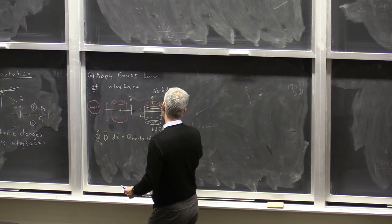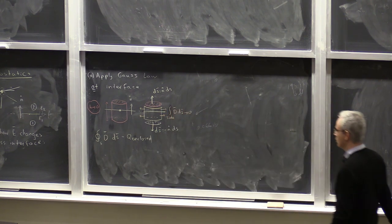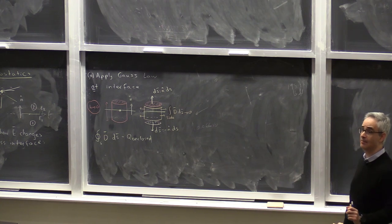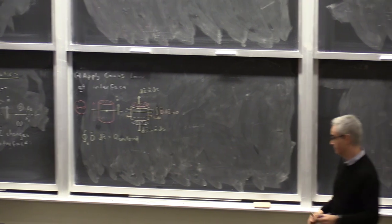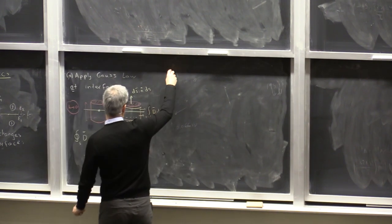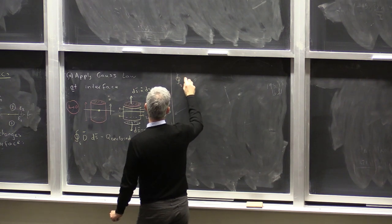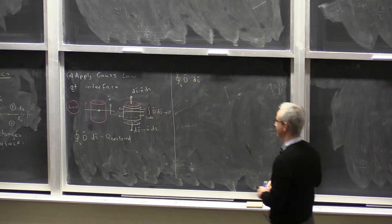The flux through the side, D·dS, goes to zero—not because the electric field goes to zero, but because this area through which I'm calculating the flux is being let to go to zero. So with this mathematical limit, I have flux only from the top and the bottom. I'm reviewing these concepts because they are really very relevant to what we will see in magnetostatics.